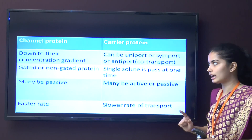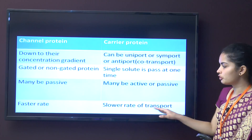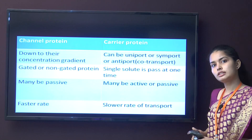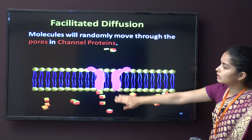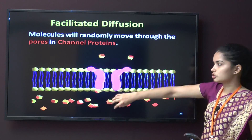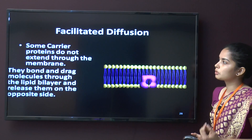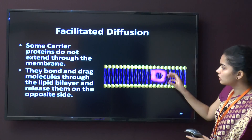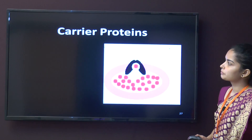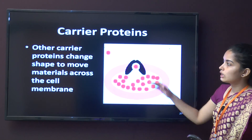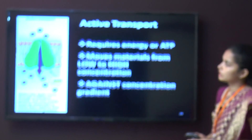Channel proteins allow a single solute to pass at a time and may be passive or active, with a faster rate of diffusion. Carrier proteins are slower in comparison. In channel proteins, molecules move randomly through the channel pore. Carrier proteins bond with the substance and then move it out of the cell or vice versa; they can also change shape according to the material moving across the membrane.